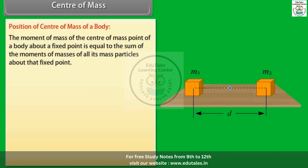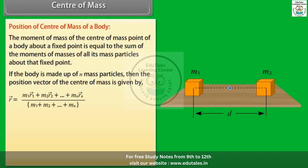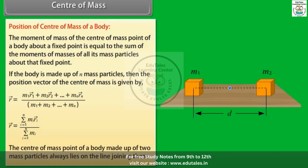If the body is made up of N mass particles, then the position vector of the center of mass is given by: R⃗ = (M₁R⃗₁ + M₂R⃗₂ + ... + MₙR⃗ₙ) / (M₁ + M₂ + ... + Mₙ), which can be summarized as R⃗ = Σ(mᵢRᵢ⃗) / Σmᵢ. The center of mass of a body made up of two mass particles always lies on the line joining them.